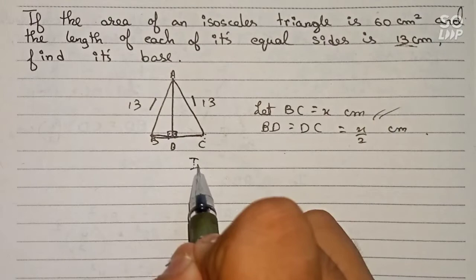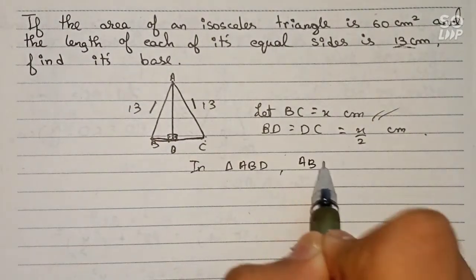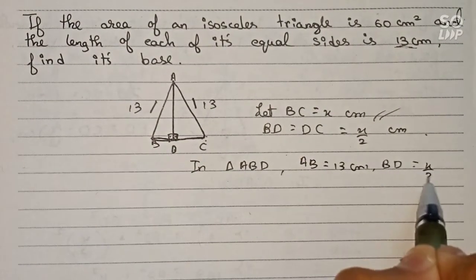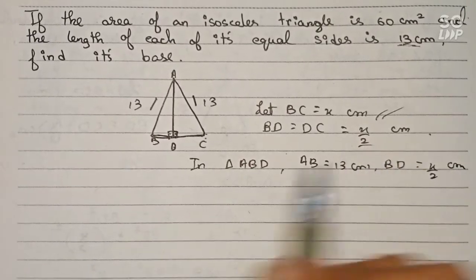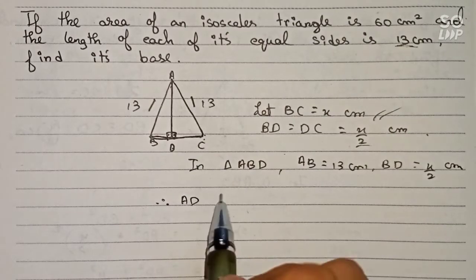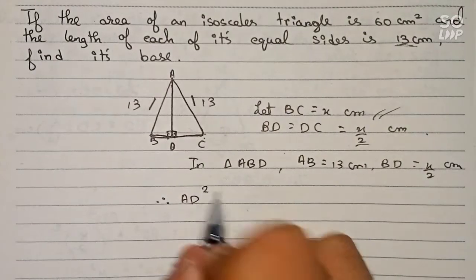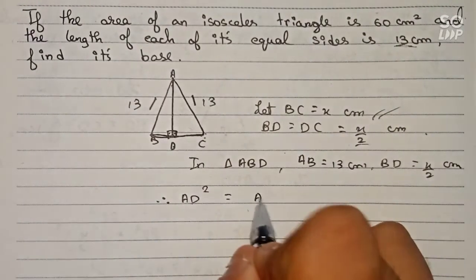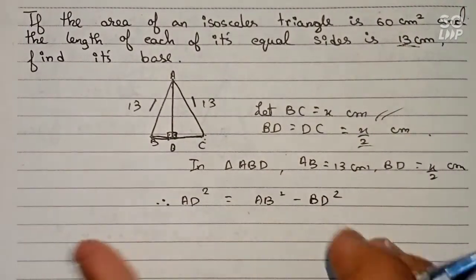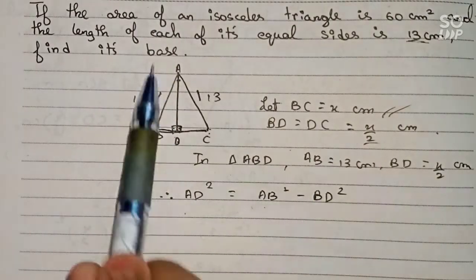Now in triangle ABD: AB = 13 cm, BD = x/2 cm. We find AD using the Pythagorean theorem. Here AD is the height, AB is the hypotenuse, and BD is the base. So: AD² = AB² − BD².